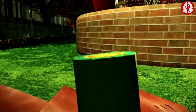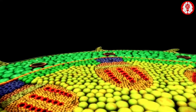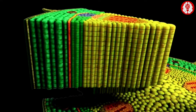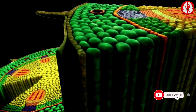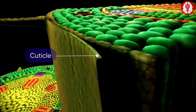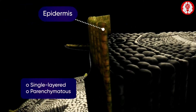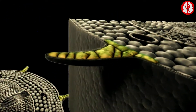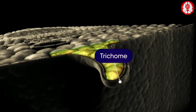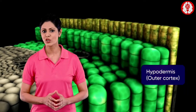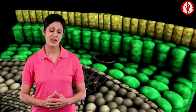Let us have a look at the transverse section of the stem. The section shows a highly organized tissue system. The anatomical structure of the young stem of a sunflower shows the following tissue systems: the outer surface of these cells is covered by a cuticle. The epidermis of the stem is single-layered and parenchymatous. The epidermis has several multicellular hairs called trichomes.